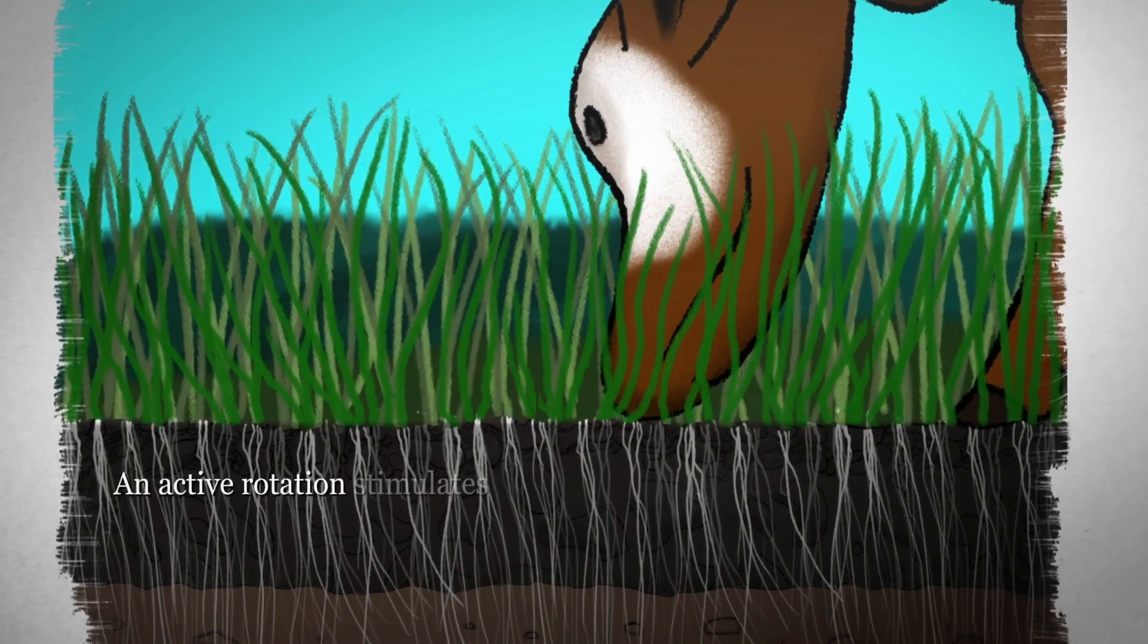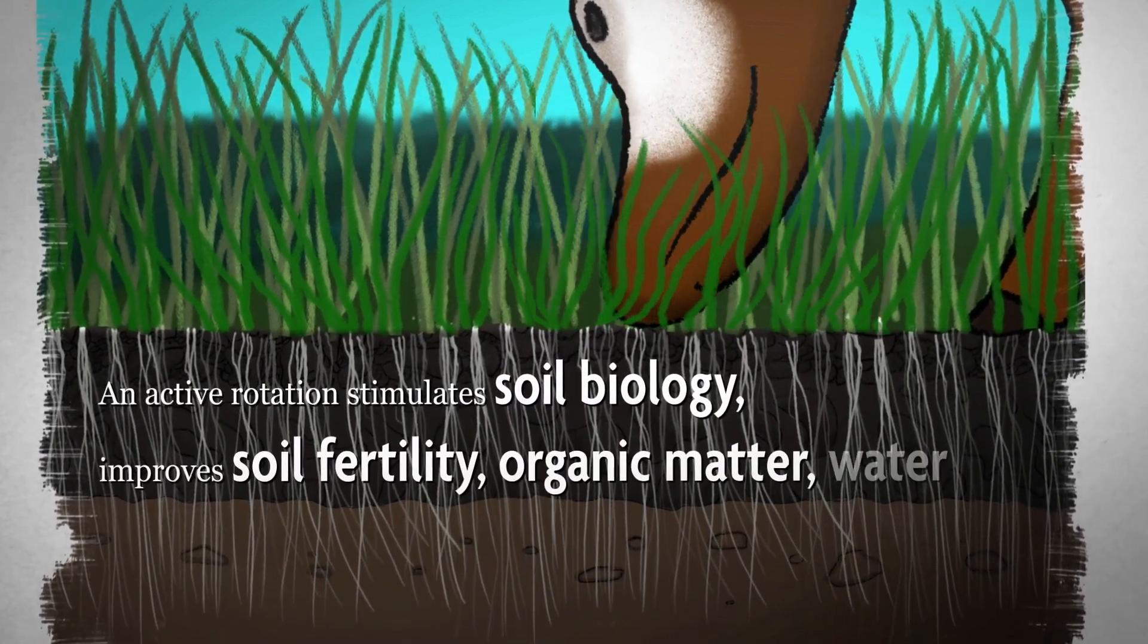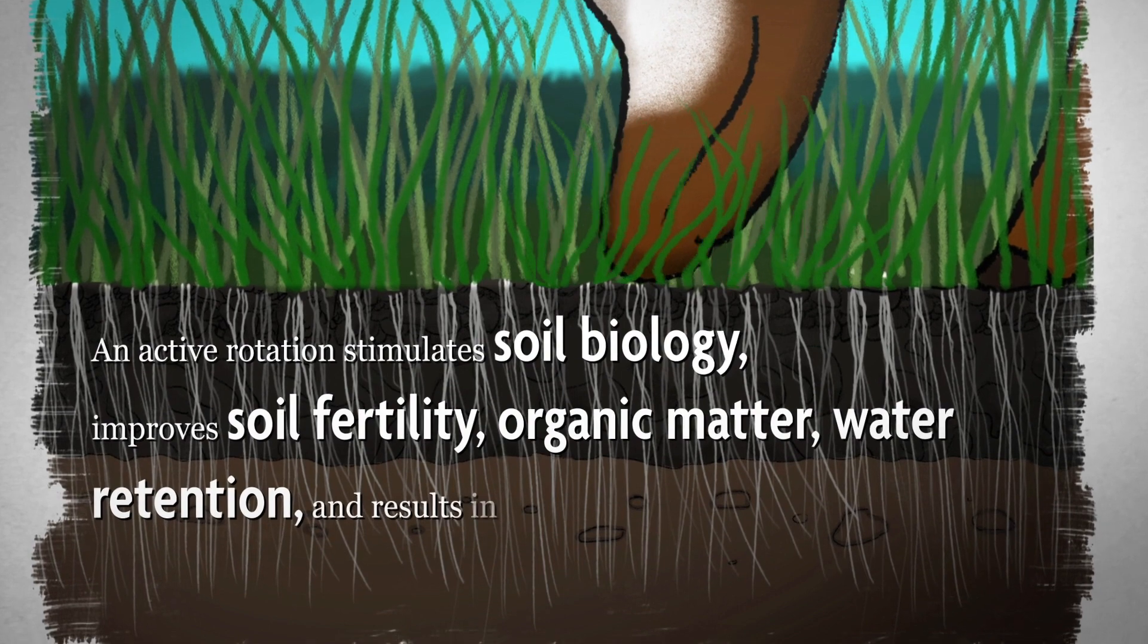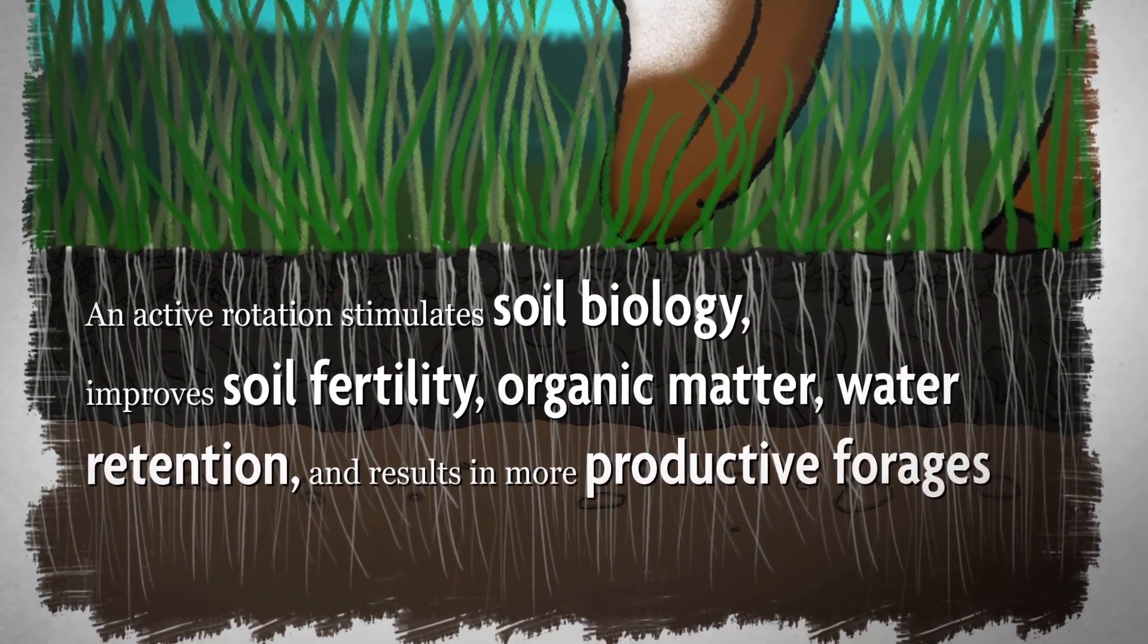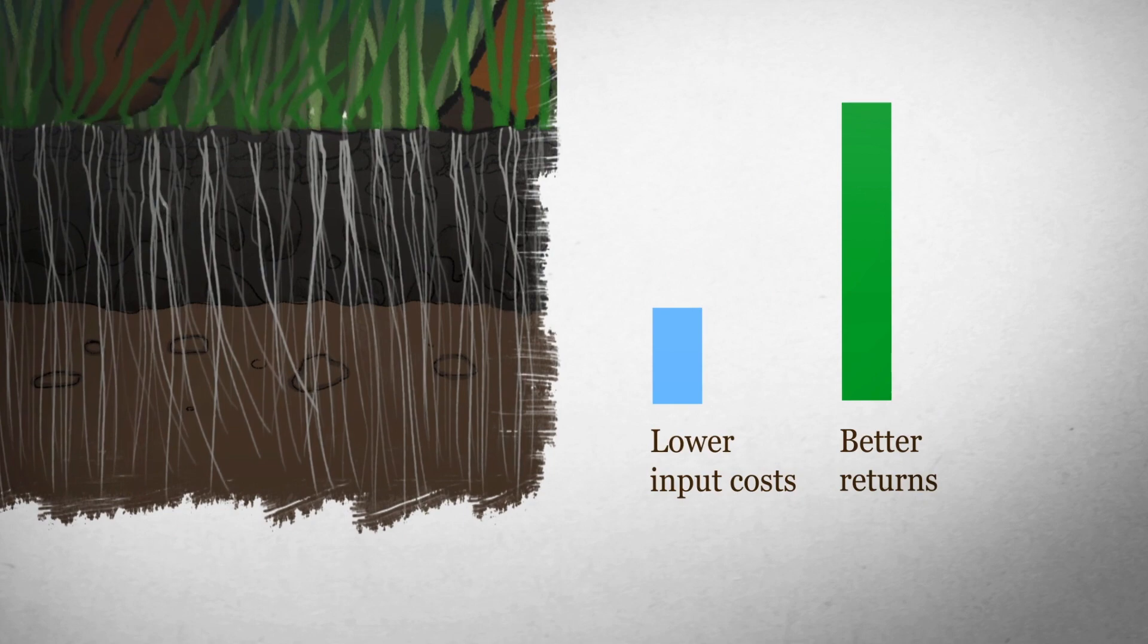An active rotation stimulates soil biology, improves soil fertility, organic matter and water retention, and results in more productive forages. This can mean lower input costs and better returns over time.